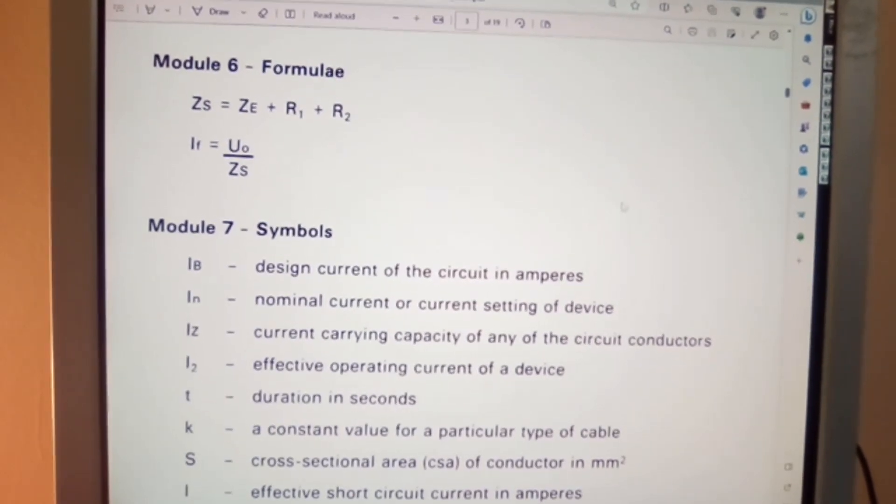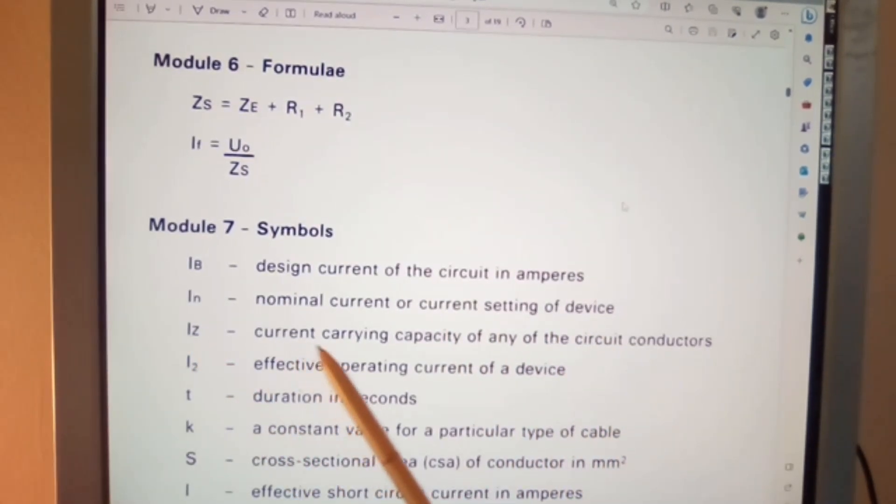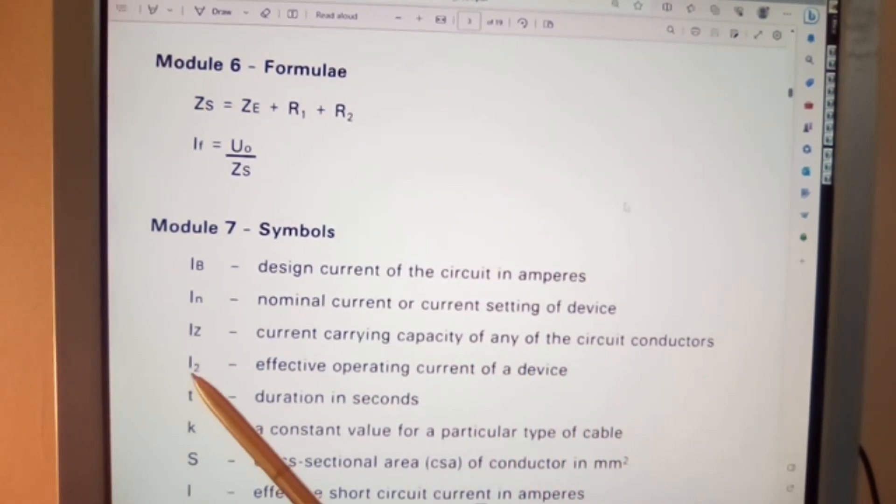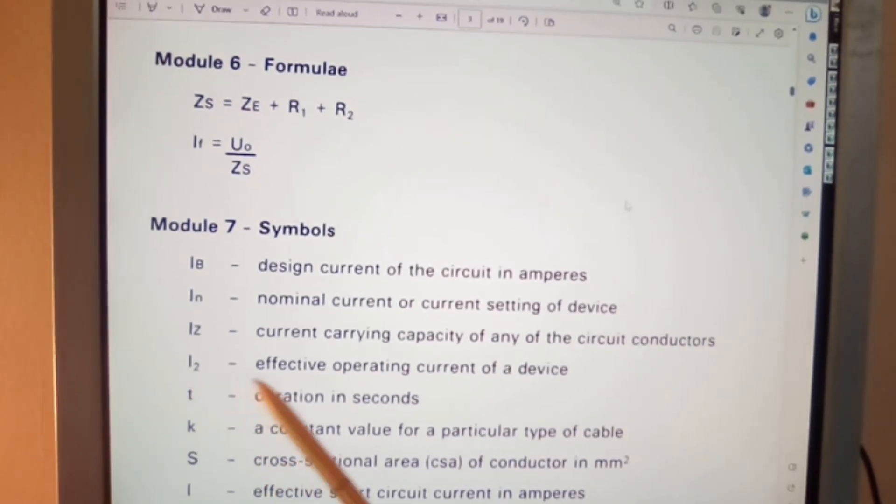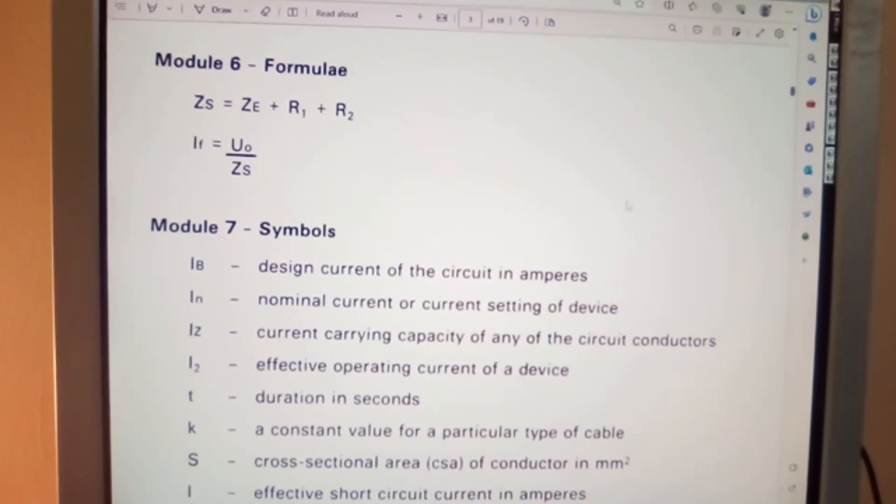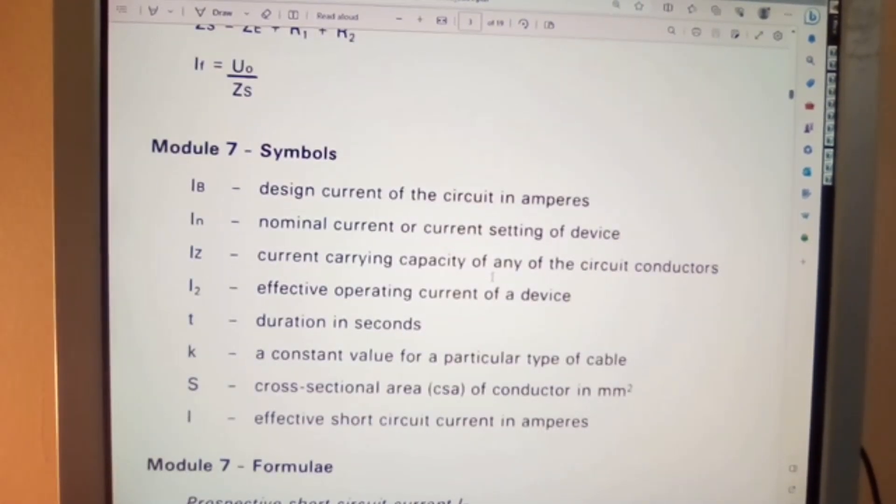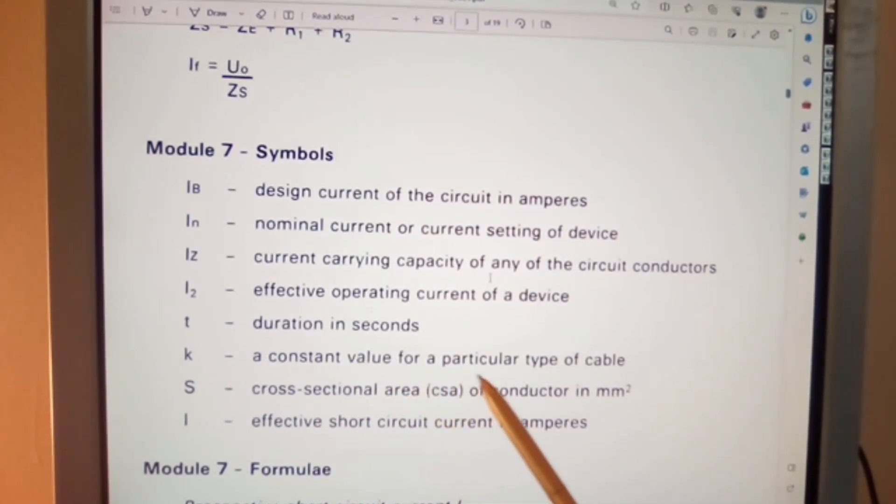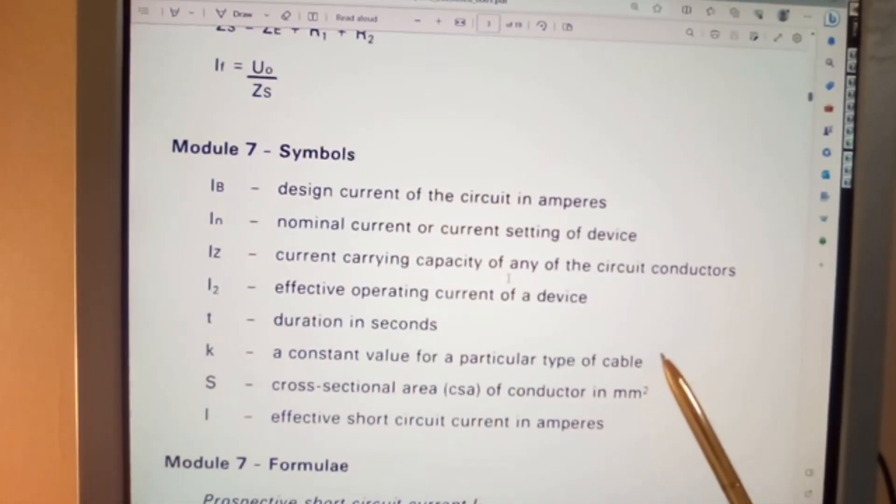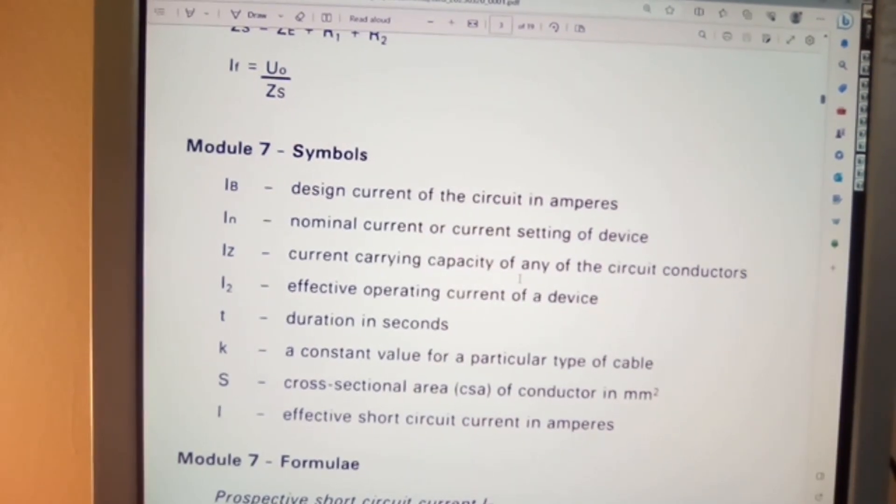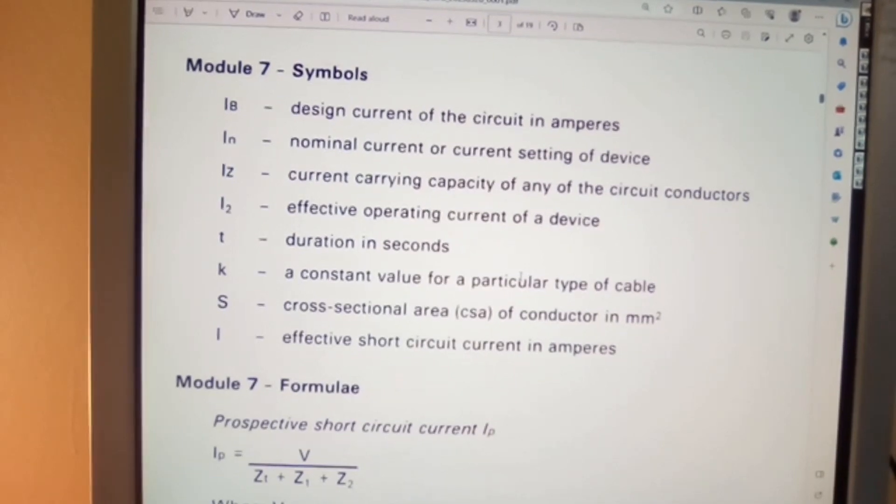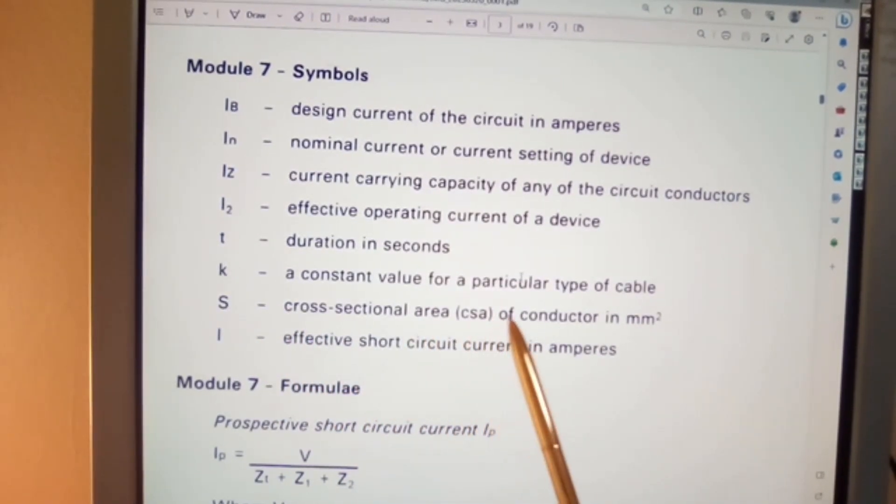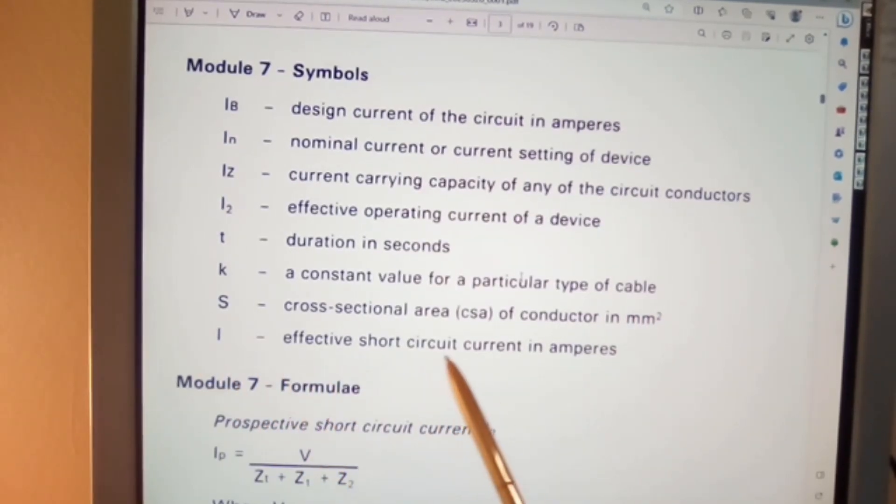Now Module 7 symbols. IB, design current of the circuit in amperes. IN, nominal current or current setting of device. IZ, current carrying capacity of any of the circuit conductors. I2, effective operating current of a device. Now it's interesting here, T in regards to time duration in seconds. A constant value for a particular type of cable. You will find these factors given in your specification for cabling, so keep that in mind. S, cross-sectional area, CSA of conductors in millimeter square. I, effective short-circuit current in amperes.